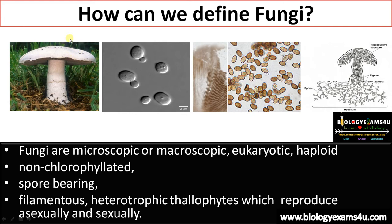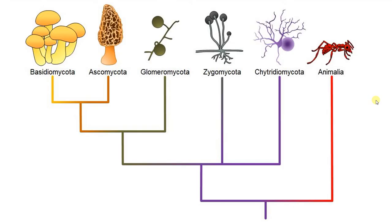In the case of mushrooms, what we see above is a fruiting body called a basidiocarp. On the substratum there is a massive mat of hyphae. Individual filaments are called hyphae, and a group of hyphae forms the mycelium.